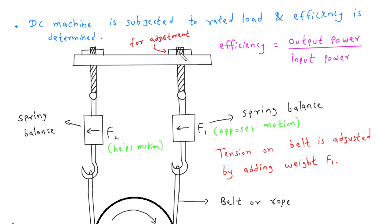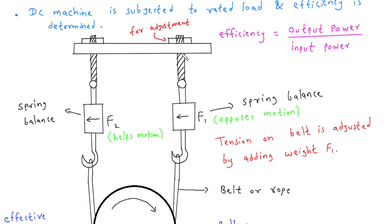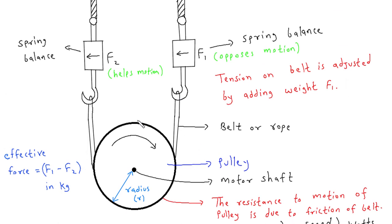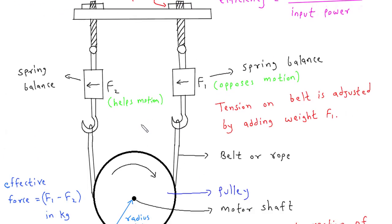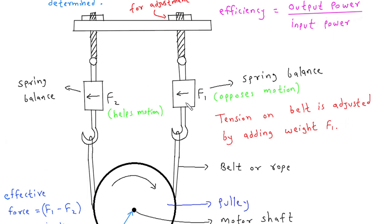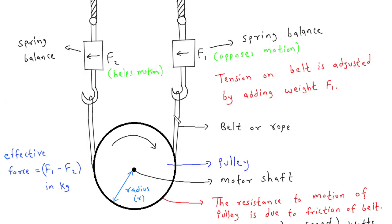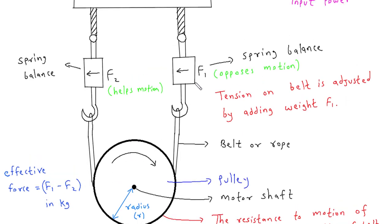Here we can see these are the hand wheels for adjustment, and this is the arrangement for brake test of DC series motor. Here are two spring balances: this is spring balance 1, this is spring balance 2. If the motor is rotating clockwise then this is to be considered as F1 and this is F2. When the rotor is rotating in the anti-clockwise direction, then it is considered as F1 and it is considered as F2.